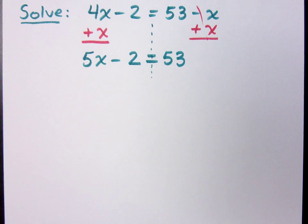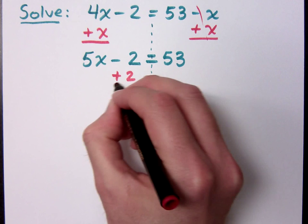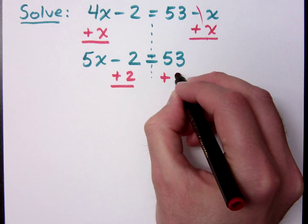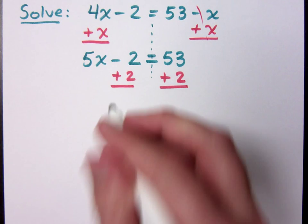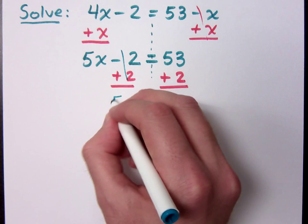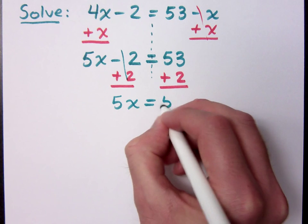And so you're right. If we add 2 to both sides, that will put my constants on the side of the equation opposite of your variables. So now I have what? 5x equals 55.